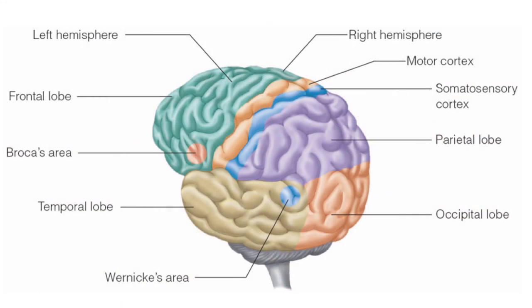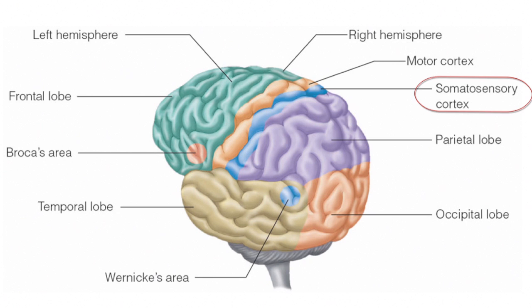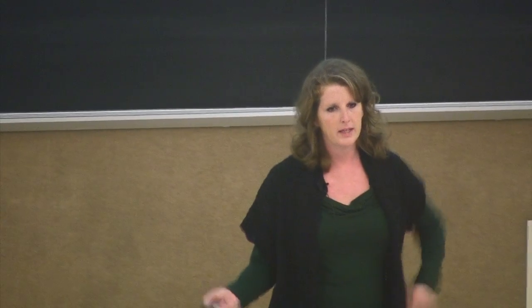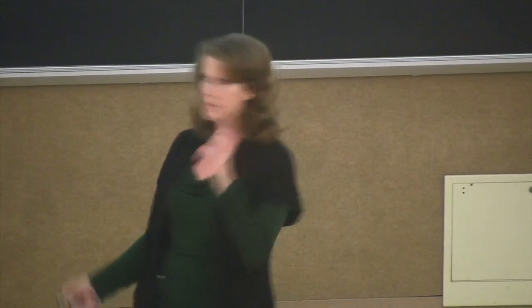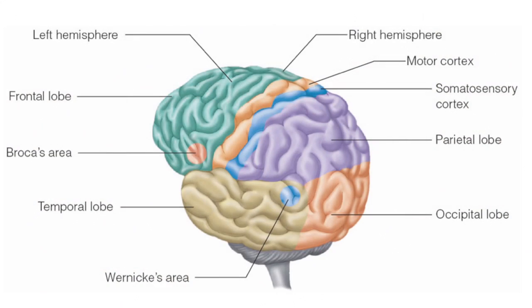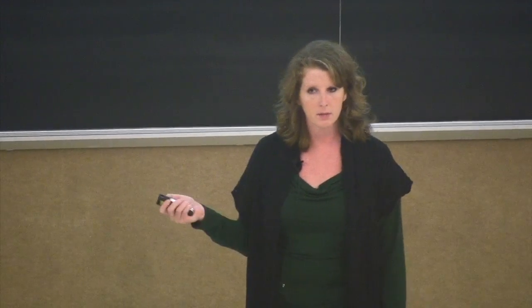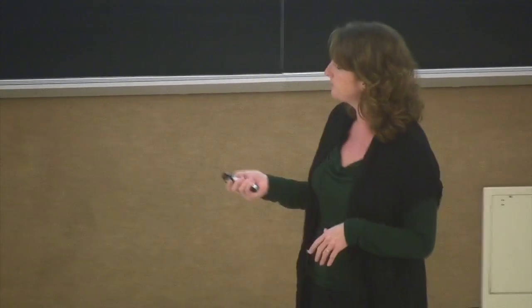We have two really interesting areas: the motor cortex in the frontal lobe, and just behind it the somatosensory cortex. All of your body is represented on both the motor cortex and the somatosensory cortex. Everything that you feel — every peripheral stimulus — maps onto a specific place on your sensory cortex. Your feet, your legs, your fingers, your nose, your mouth — all map on. We also have a motor cortex onto which your whole body maps.